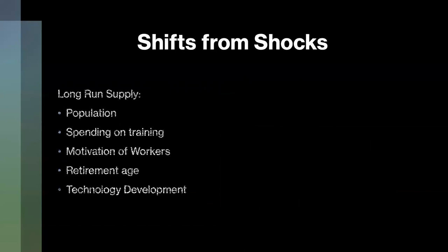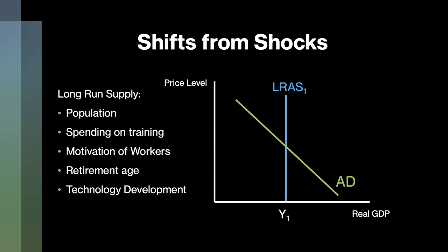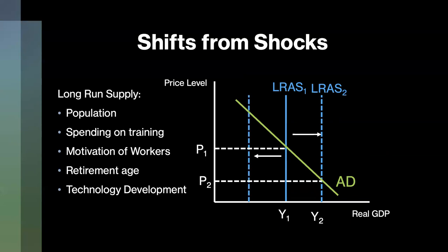Finally, there are the long-run aggregate supply shifts, which occur due to anything affecting the potential GDP, including population changes such as immigration and emigration, increased or decreased spending on training to educate workers, the motivation of workers, changing the retirement age, and technology or infrastructure development that increases production. This is because potential GDP is where full employment occurs, and anything that affects employment will affect the long-run aggregate supply curve. For example, an increase in population will cause a shift right and an increase in potential GDP, whereas lowering the retirement age and decreasing spending on training would cause a shift left, lowering potential GDP and increasing price.